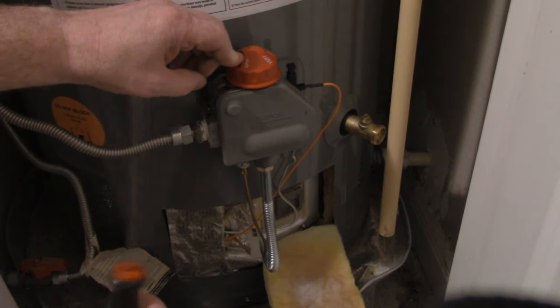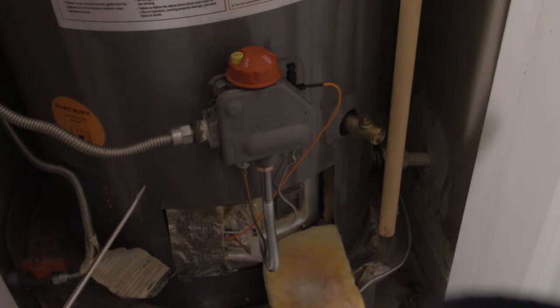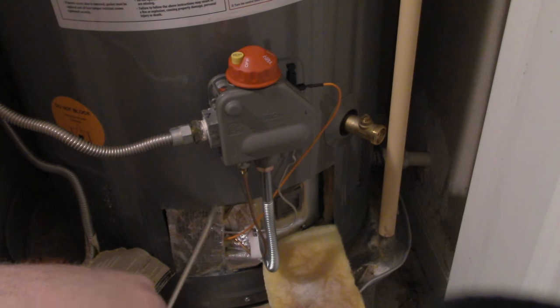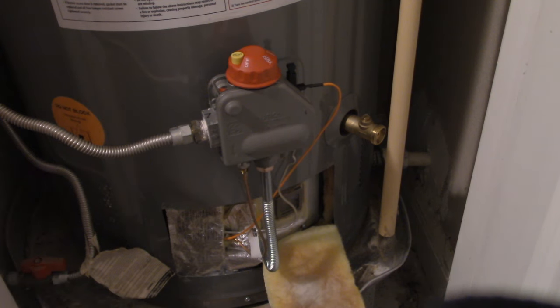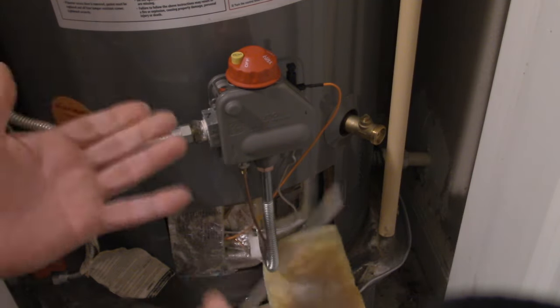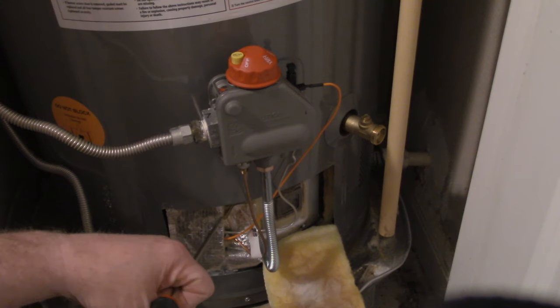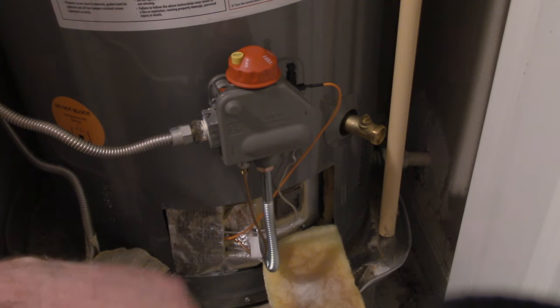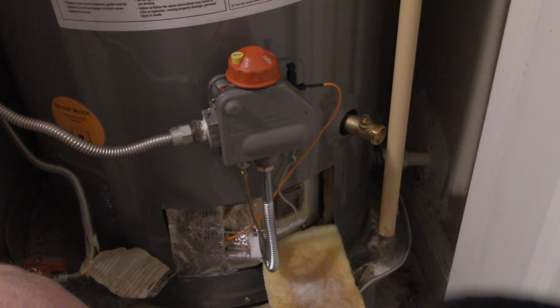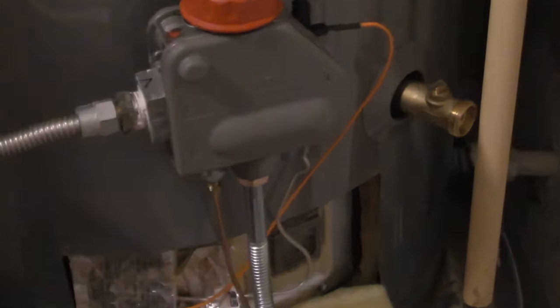So the problem is, if this thermocouple loses that voltage, for whatever reason, it shuts this off and when you lift the pilot light up, that flame will extinguish. The theory with that is, if your pilot light blows out, you don't want to fill your closet, your house, with the propane or the natural gas that should be going to that pilot light. So how do we fix that?